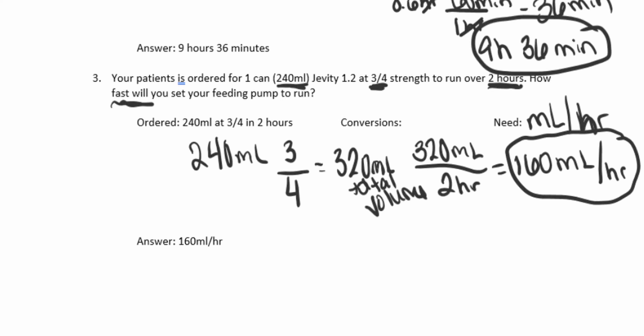So to recap: we found out what we needed, which was milliliters per hour. Then we found what was ordered — 240 mLs at three-quarter strength in two hours. We got the total volume: 240 at three-quarter strength equals 320 mLs. Then 320 mLs over two hours gives us 160 milliliters per hour.